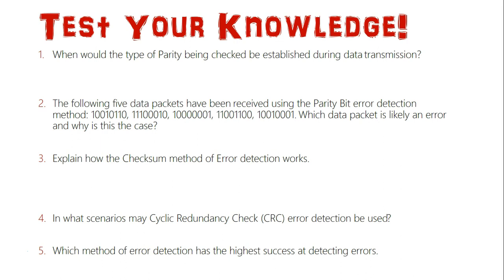Question 1: When would the type of parity being checked be established during data transmission? Question 2: The following five data packets have been received using the parity bit error detection method: 10010110, 11100010, 10000001, 11001100, and finally 10000001. Which of these packets is likely in error and why?